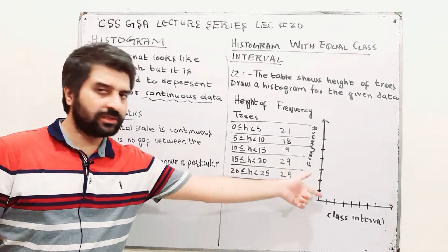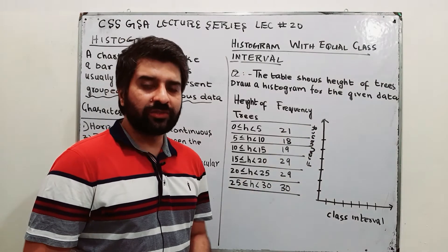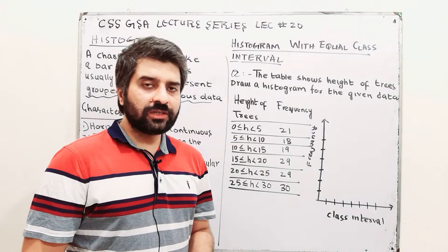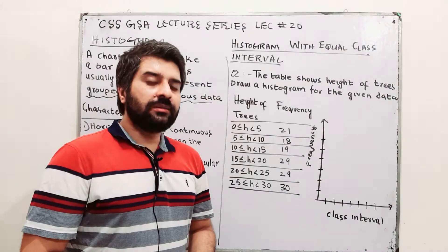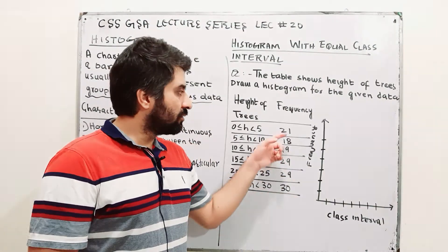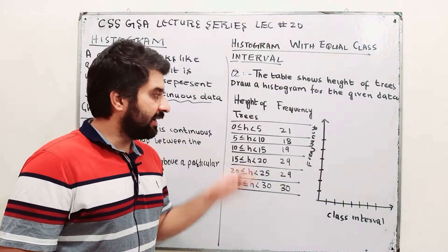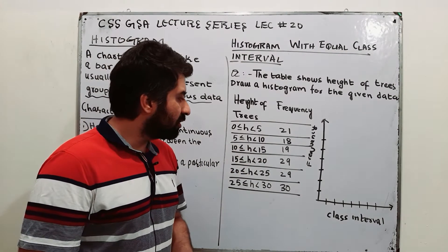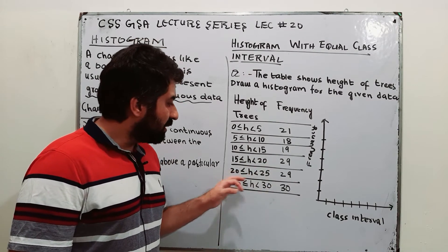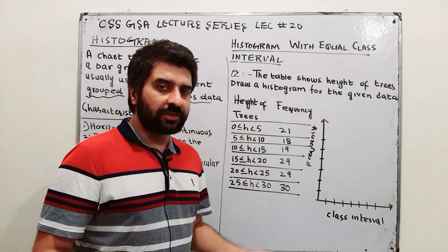Let me elaborate with a question. The table shows height of trees observed in a survey, and you have to draw a histogram. You have been given data in a frequency table showing the frequency of each group. The group from 0 to 5 has frequency 21, 5 to 10 has frequency 18, 10 to 15 has frequency 19, 15 to 20 has frequency 29, 20 to 25 has frequency 29, and 25 to 30 has frequency 13.